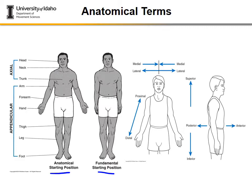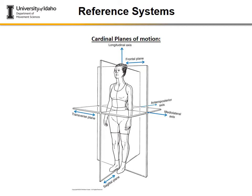Another key component is understanding the basic difference between the anatomical starting position and the fundamental position. This is oriented around how the arms are positioned — whether your hand and arm is supinated, which puts a little rotation and change in the position of the shoulder, as well as in the way the radius and ulna and the palm are facing in the upper body.